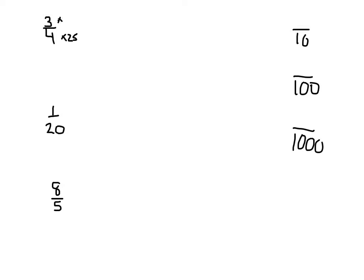Now, to keep the fraction the same equivalent, I need to multiply the top by the same number. I'm in a sense multiplying by one, twenty-five over twenty-five. And I'm going to get an equivalent fraction of seventy-five hundredths, which as a decimal number is seventy-five hundredths.